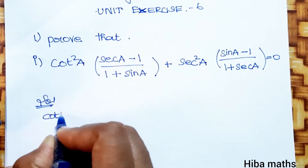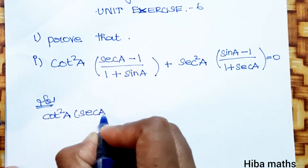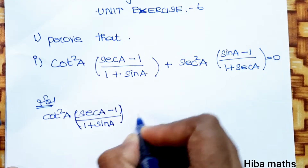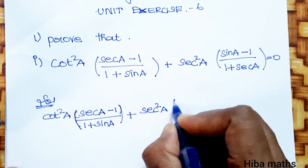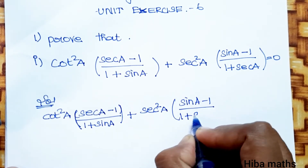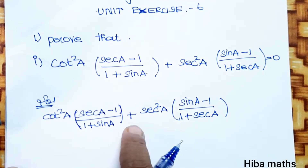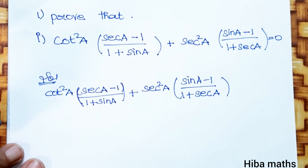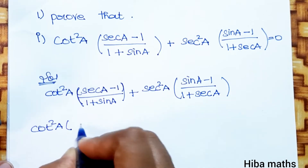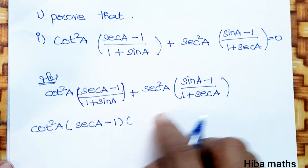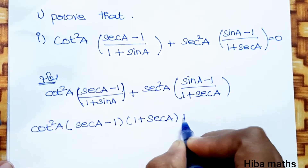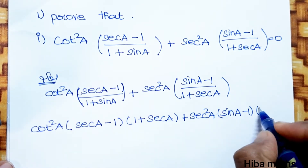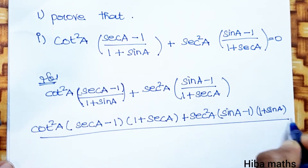In the solution, LHS is: cot squared a times (secant a minus 1) divided by (1 plus sin a), plus secant squared a times (sin a minus 1) divided by (1 plus secant a). To add these two fractions, the denominators are different — (1 plus sin a) and (1 plus secant a) — so we cross multiply.